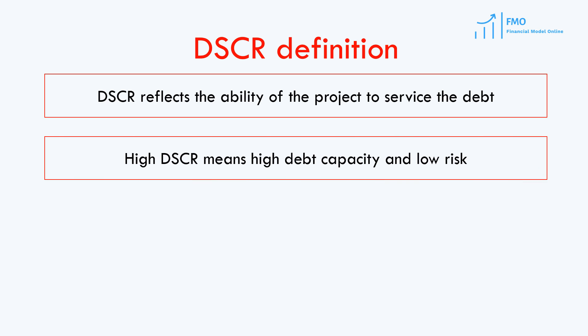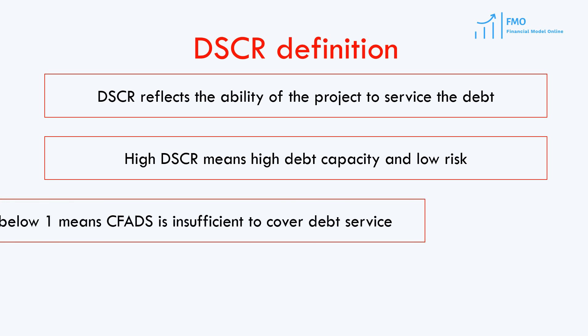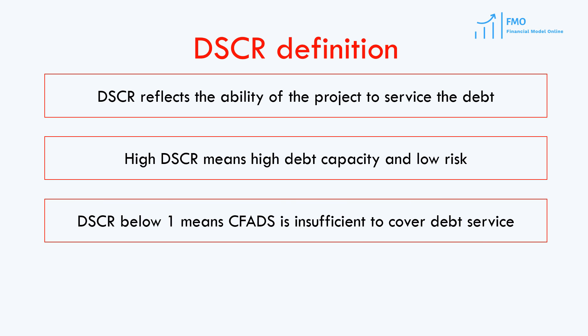A high DSCR generated by the project means that the project is generating cash flows that significantly exceed the debt principal and interest payments. It is possible in such a situation to increase the leverage of the project. A DSCR below 1 means CFADS is insufficient to cover debt service, and as a result, the project's debt has to be reduced to reduce the debt service.